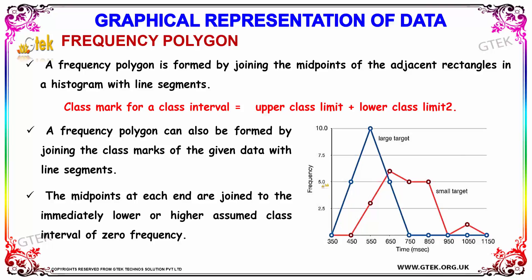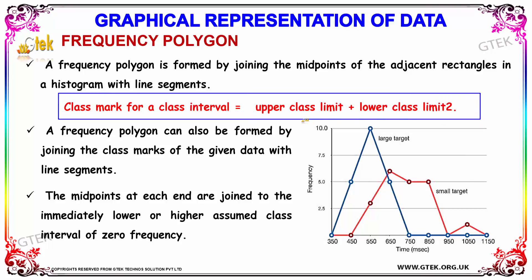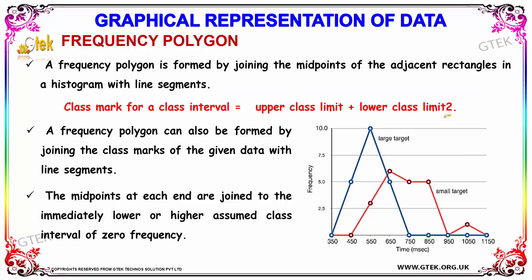Now let us discuss about the frequency polygon. A frequency polygon is formed by joining the midpoints of the adjacent rectangles in a histogram with line segments. The class mark for a class interval is calculated as upper class limit plus lower class limit. A frequency polygon can also be formed by joining the class marks of the given data with line segments.